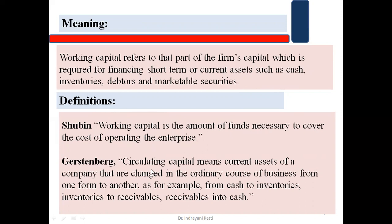In the words of Justin Burke, circulating capital means current assets of a company that are changed in the ordinary course of business from one form to another. While performing the operations of the organization, one current asset changes its form to another — for example, from cash to inventories, from inventories to receivables, and from receivables back to cash.